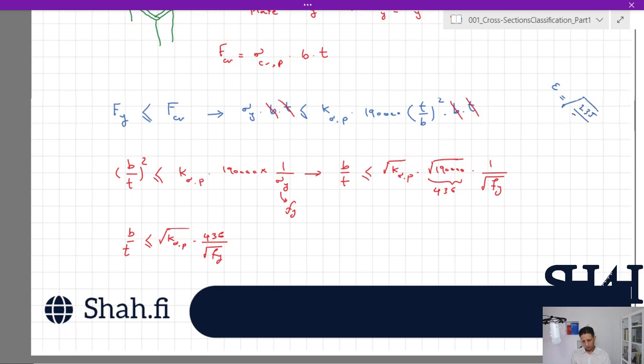In Eurocode we have a parameter called epsilon, and it's square root of 235 divided by fy. It shows what kind of steel grade we are using, and 235 is the base which is relevant to S235. Fy should be in megapascals. As a result, if I multiply this by square root of 235 divided by square root of 235, this value will be square root of k sigma p times 436 divided by square root of 235 divided by fy, and this value is taken as epsilon, and it will be 28.4.